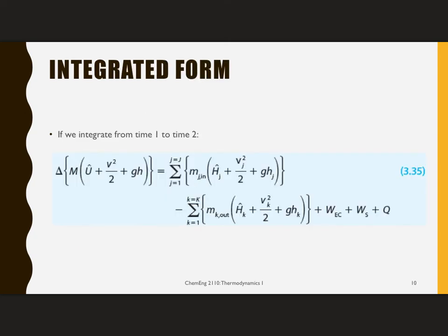If I rewrite this in its integrated form, then I'm going to look at the change. So that's going from final minus initial, time two to time one, starting at time one, ending at time two. So you subtract time two minus time one. And then the sum of everything coming in minus the sum of everything coming out, plus the accumulation of my work and my heat transfer. These are our basic forms of our energy balances.